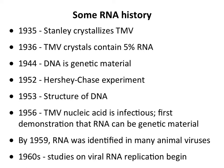A year later the crystals were found to have 5% RNA in them. It wasn't until 1944 that DNA was found to be genetic material via the Hershey-Chase experiment. The structure of DNA was solved in 1953. Then in 1956, tobacco mosaic virus RNA was shown to be infectious — the first time RNA was shown to be a genetic material.